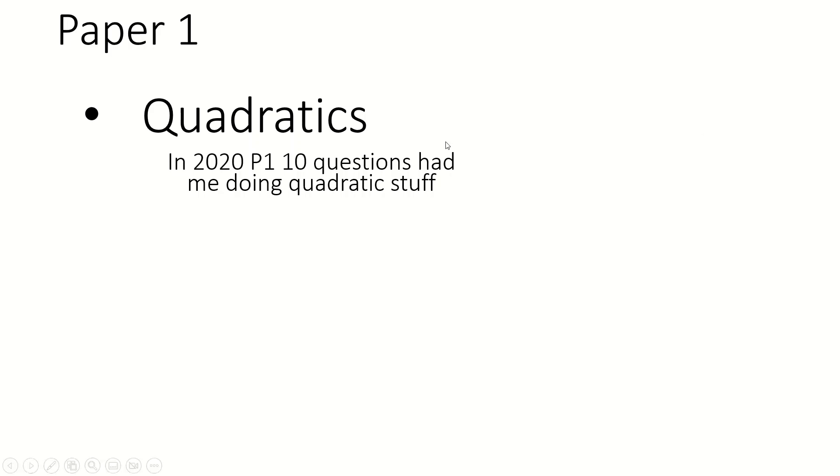Now hear about some specific paper one stuff, and there's only a couple of things to say here. The first one is quadratics. Quadratics, quadratics. You need to be good at quadratics. In 2020, paper number one, I just looked through my video that I made on it, 10 questions out of 20 had me doing quadratic stuff. So if you were very good at quadratics, and you were taking the 2020 paper, you got half marks immediately, just because you were very good at that. And I'm cherry picking a little bit, but usually it is a very high number. This is just the highest it's ever been, I think.